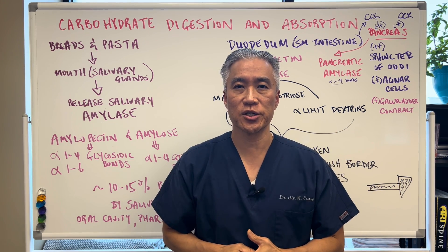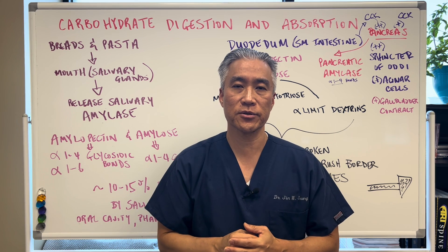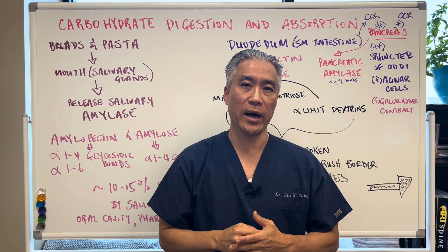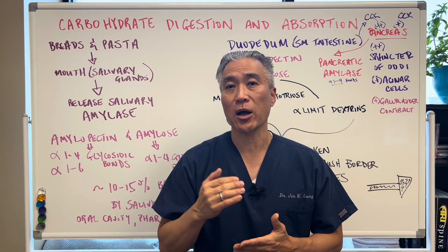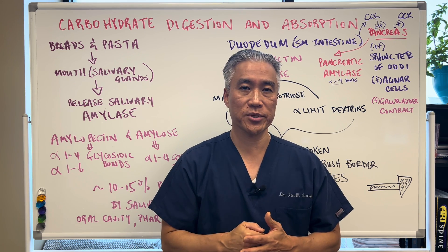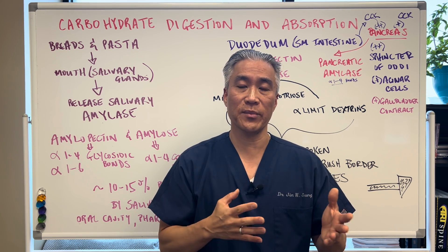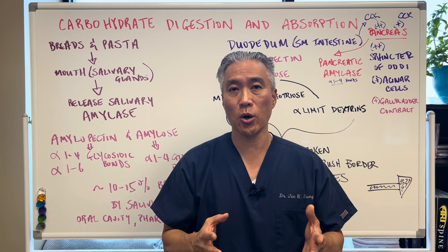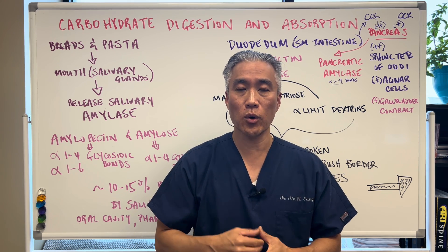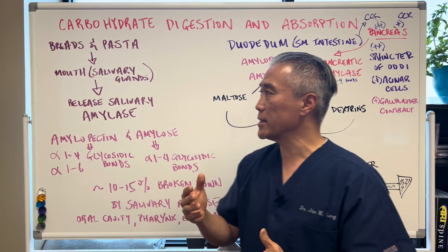Welcome back. This is Dr. Jin Sung, where clinical excellence meets excellent results. How do we make glucose from carbohydrates? Today we're going to talk about carbohydrate digestion and absorption. These are very foundational aspects of metabolism. We're going to go in detail about the metabolism, or the breakdown, of carbohydrates. So let's get right into it.